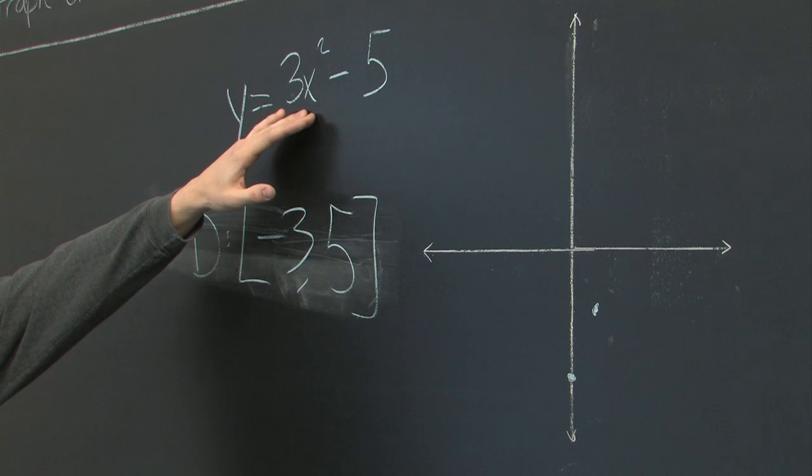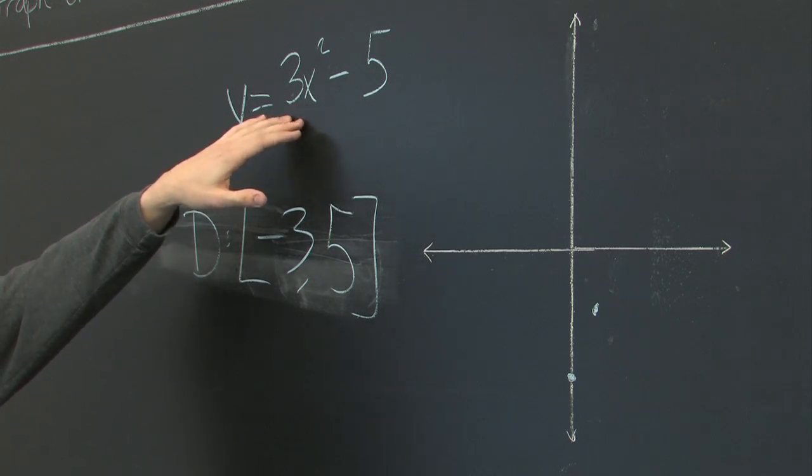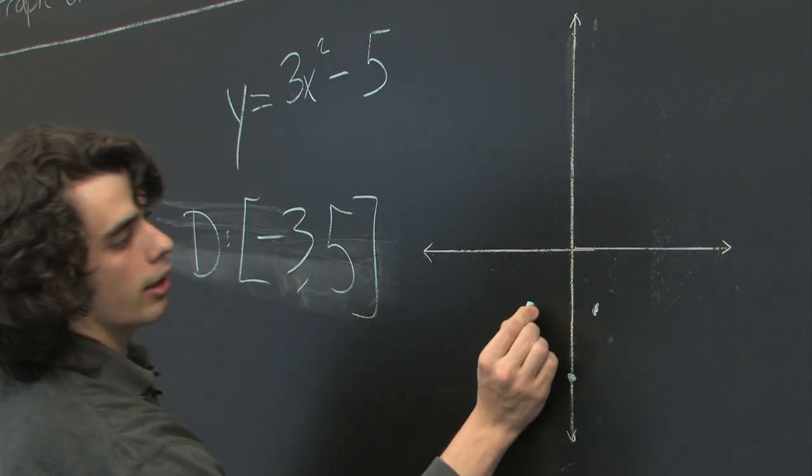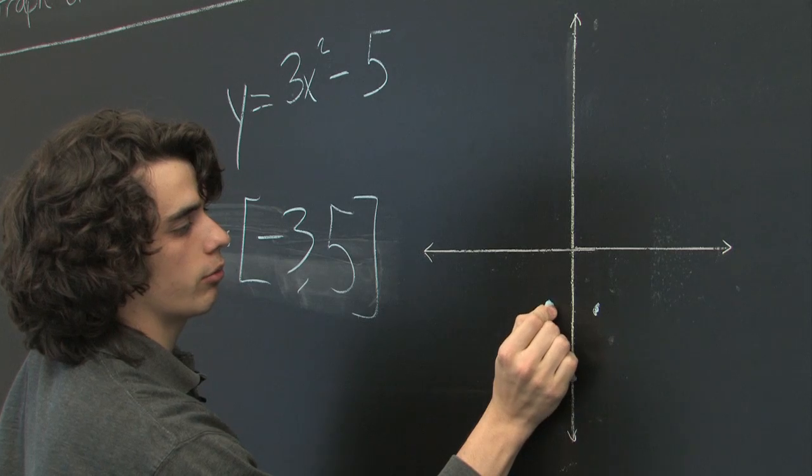And negative 1, we get 3 minus 5, negative 2. Again, we see that this is going to be symmetric for the most part.